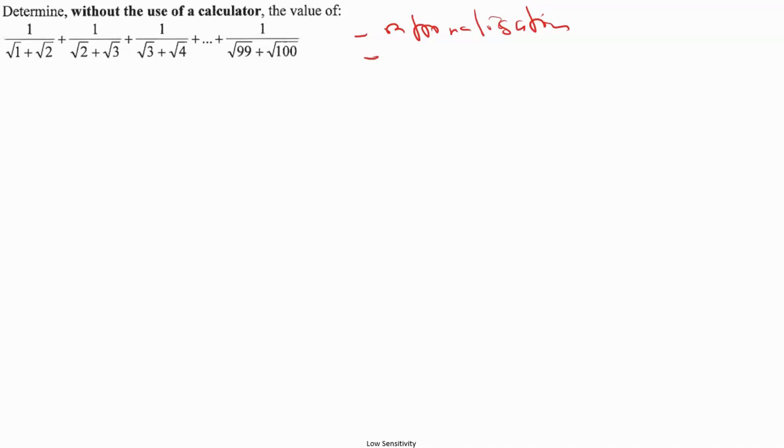For example, if we take the first expression which is 1 over square root of 1 plus square root of 2, if you want to rationalize this we need to multiply the numerator and the denominator by square root of 1 minus square root of 2.